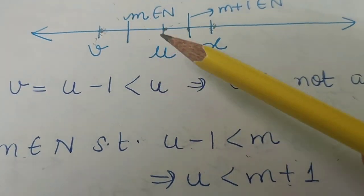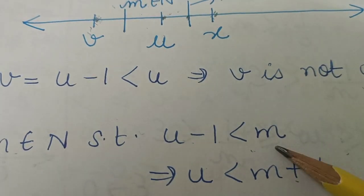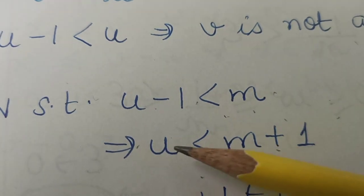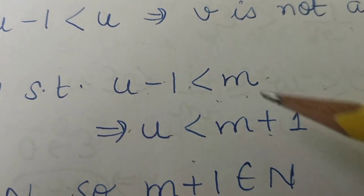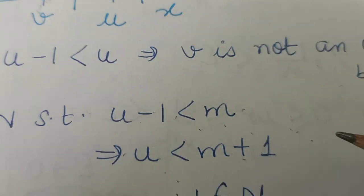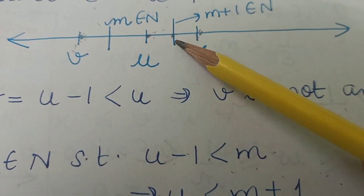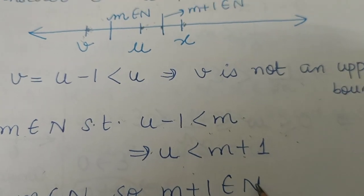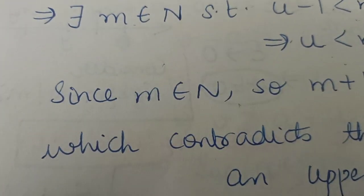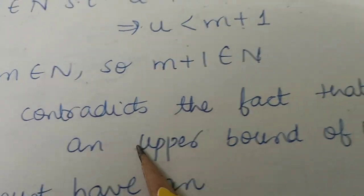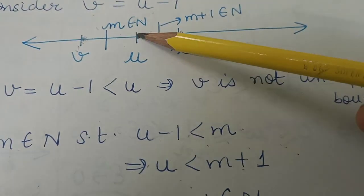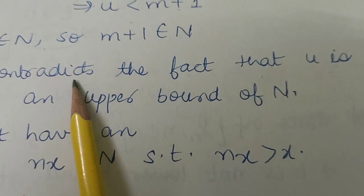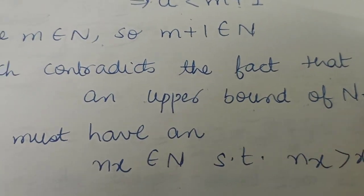This means u < m + 1. Since m is a natural number, m + 1 also belongs to the natural numbers. But u was supposed to be an upper bound of the natural numbers — meaning all elements of the natural numbers were smaller than u. Yet we found a natural number m + 1 that is greater than u. This contradicts the fact that u is an upper bound of the natural numbers.